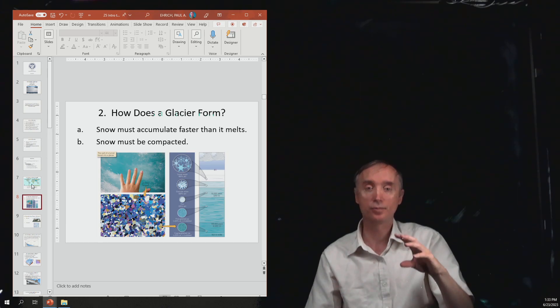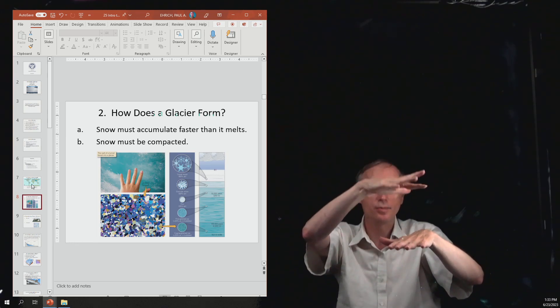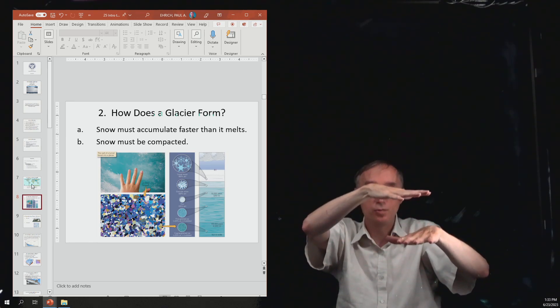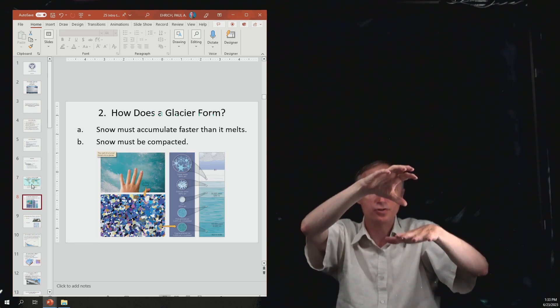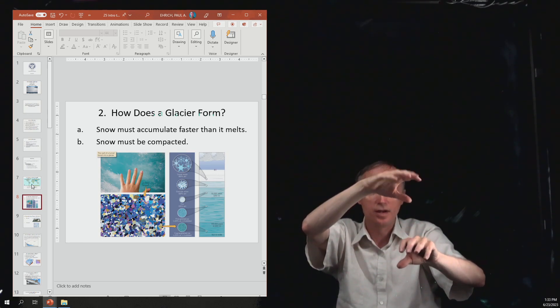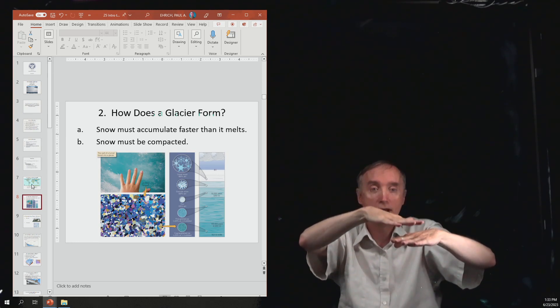Let's say that in a particular area it snows, and then it snows on top of that snow. Well, the weight of this snow up here is going to start to put pressure on this snow that's down here, and it's going to start to compact it.